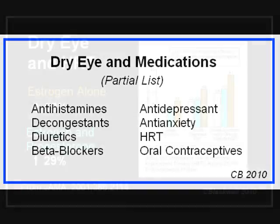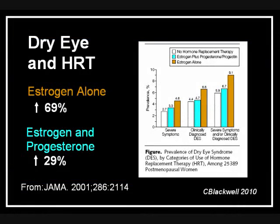Here is one big example. HRT stands for Hormone Replacement Therapy, used to help women with postmenopause symptoms. In a large study of 26,000 women, it was pretty clearly established that supplementing with estrogen alone increases the incidence of dry eye by 69%. With estrogen plus progesterone, it is less — a 29% increase in dry eye. Like many things, there is a balance between the beneficial effects of a medication and its side effects.